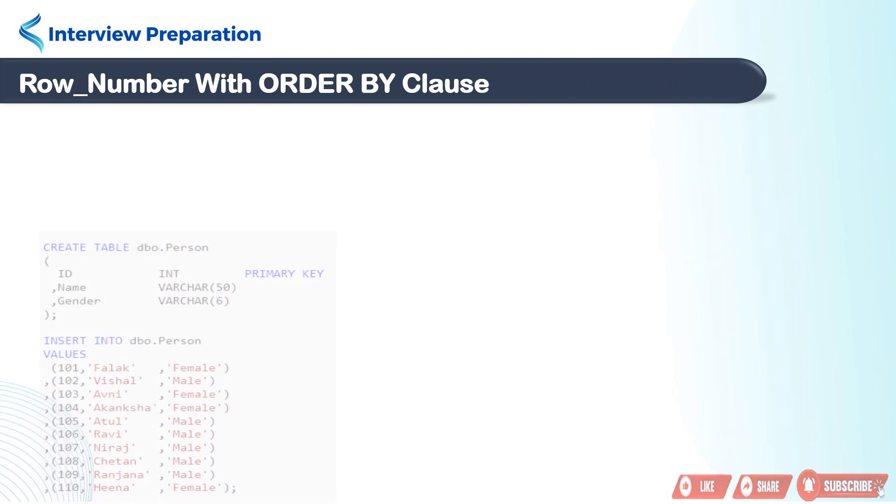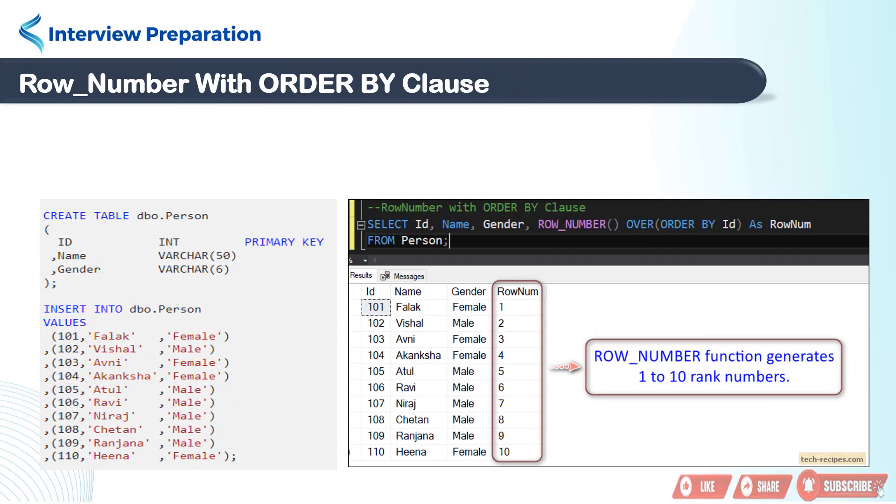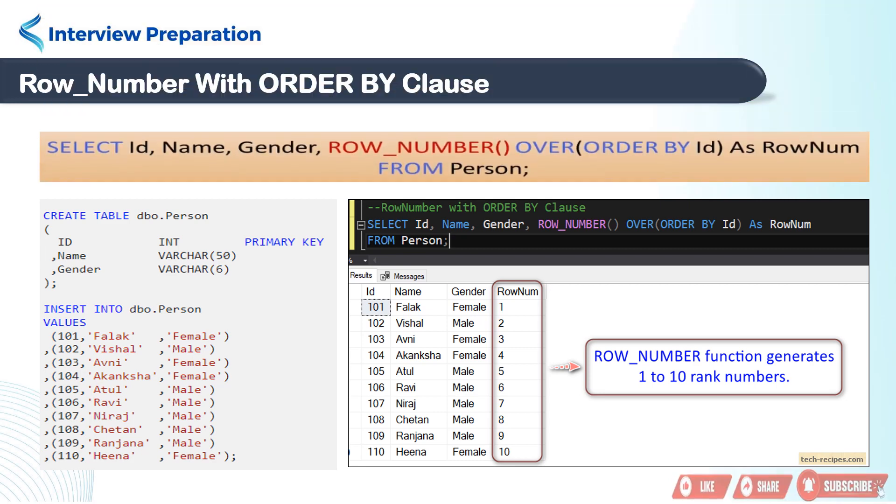Let's understand ROW_NUMBER function with practical examples. Here we are creating person table and inserting some data. Now we will apply ROW_NUMBER function with ORDER BY clause on the ID column. We will write a query like ROW_NUMBER OVER ORDER BY ID. Now what it does?